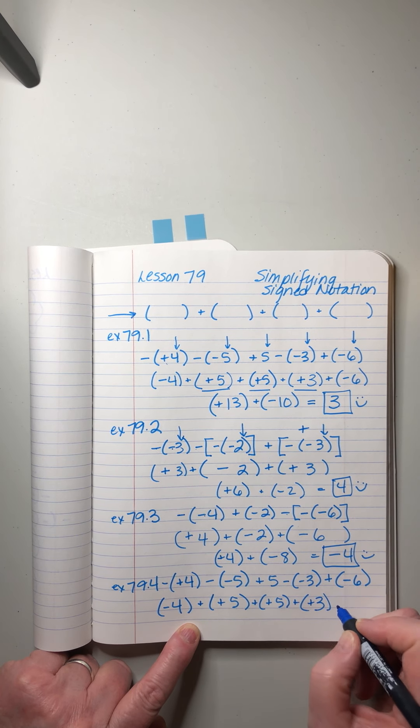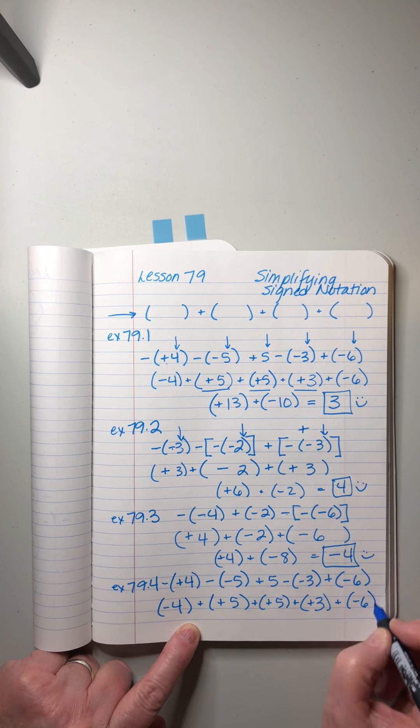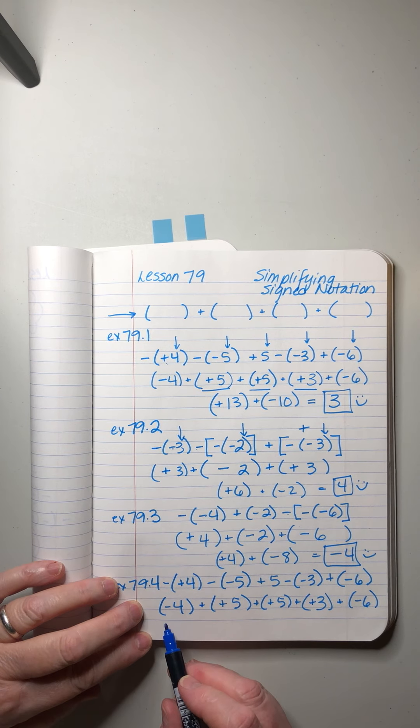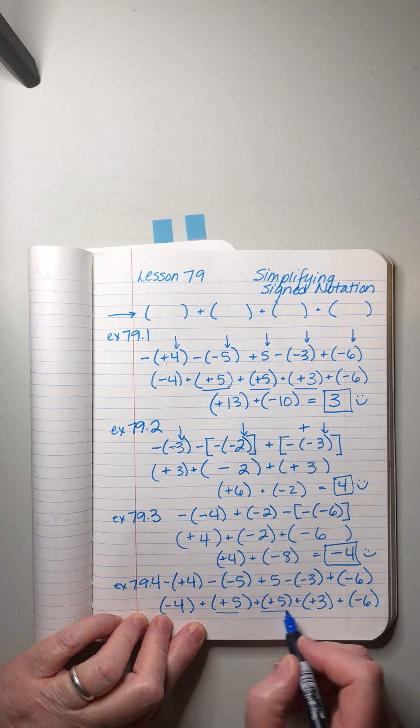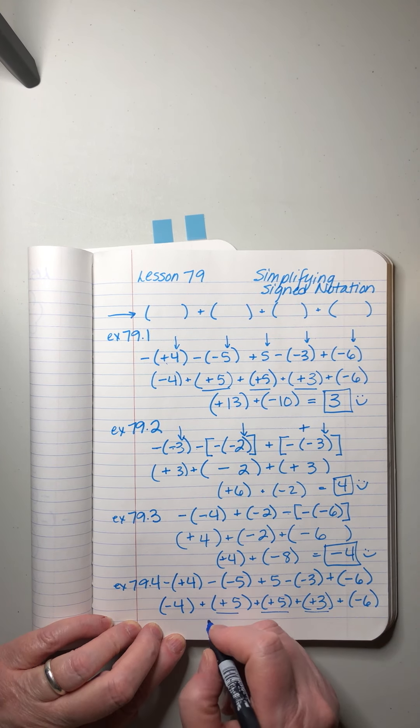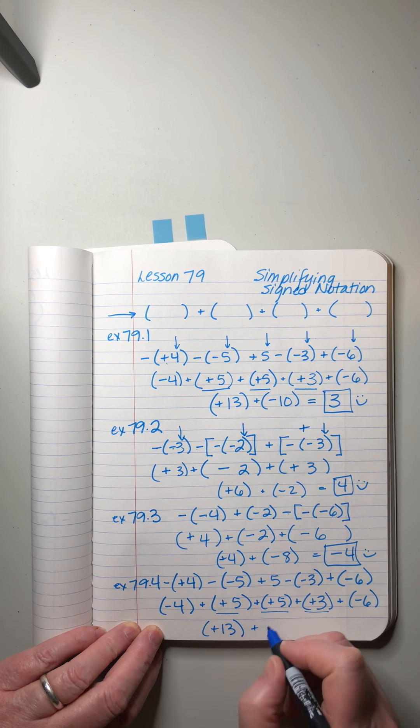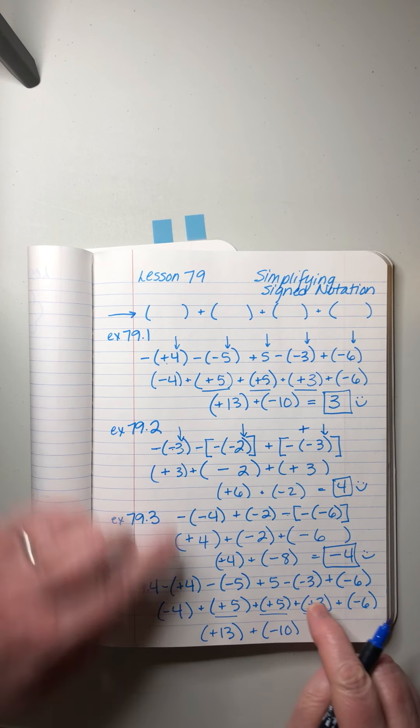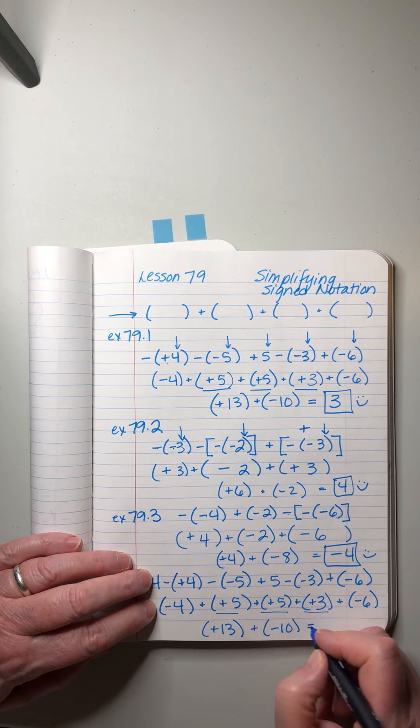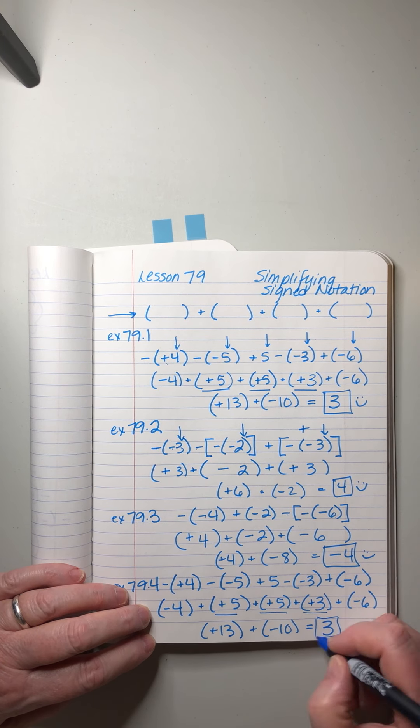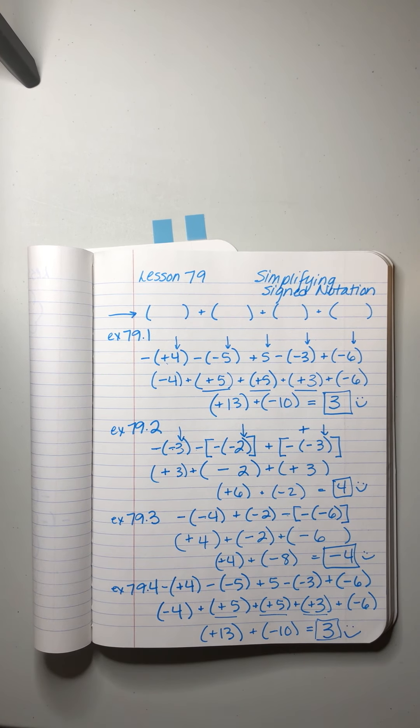What about this three? That's going to turn into a plus three, and then our negative six. All right, now I do all my positives: five and five and three, that's 13. And then plus minus 10, it's the same as this first one. I'll show you what John does that's a little bit different in the way that he solves it.